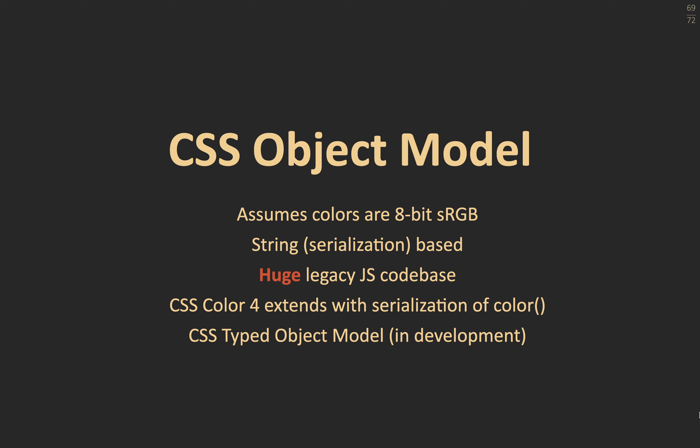The CSS object model — how JavaScript interacts with the web page — assumes colors are 8-bit sRGB. Although called an object model, it works by serialization, passing around strings and reinterpreting them. There is a huge legacy code base: every script on the web that manipulates color knows color is 8-bit sRGB and will have to be upgraded. In Color 4 we defined the serialization more closely, going for extreme backwards compatibility for existing syntactic forms while also adding serialization for the new color, LAB, and LCH forms. Beyond that, there's work on a typed object model — instead of getting a string back you'd get a color object and call methods on it for color space conversion.